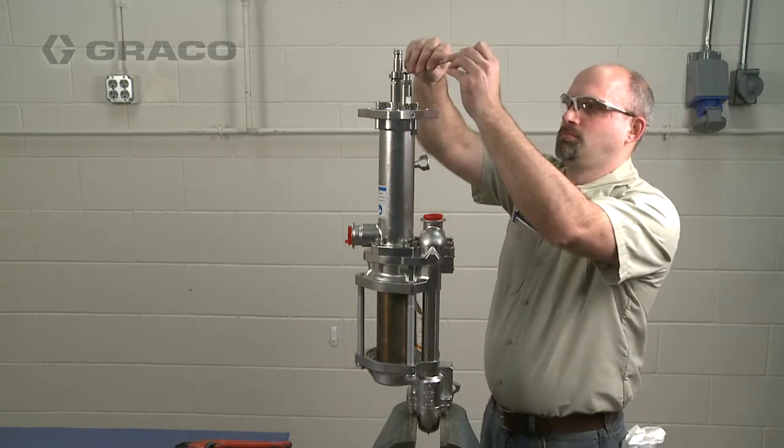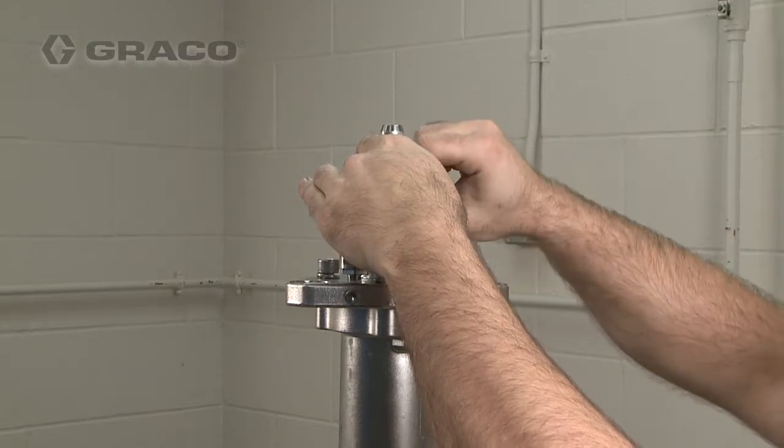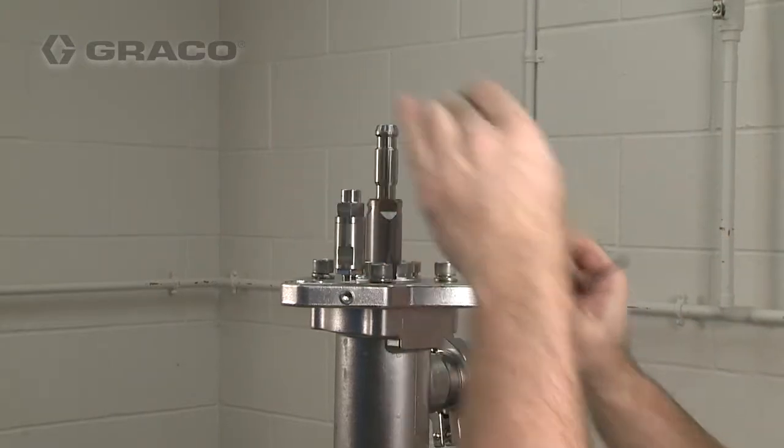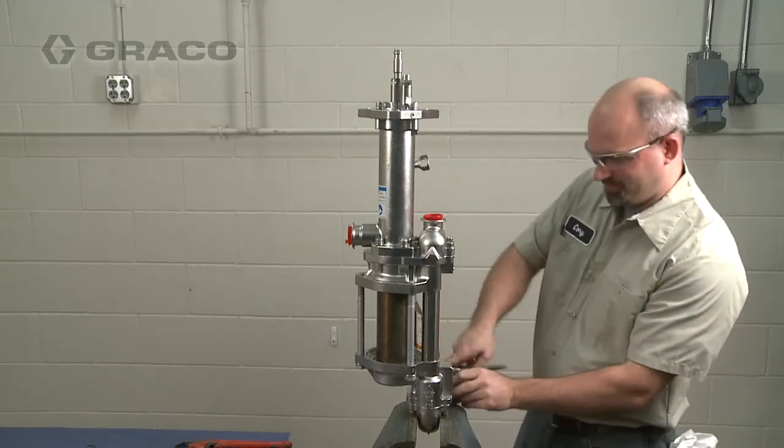In preparation for pump lower disassembly, stop the pump at the bottom of its stroke. Follow the pressure relief procedure and then remove the pump lower from the motor as outlined in the manual.